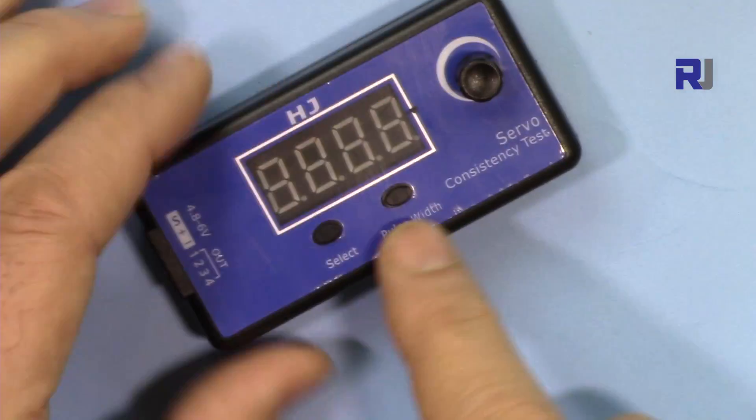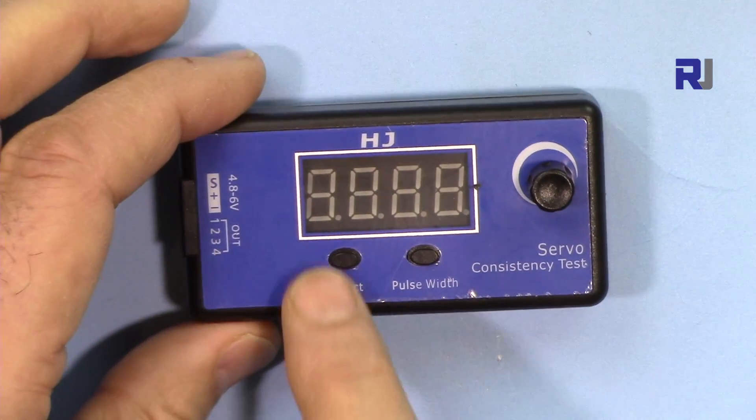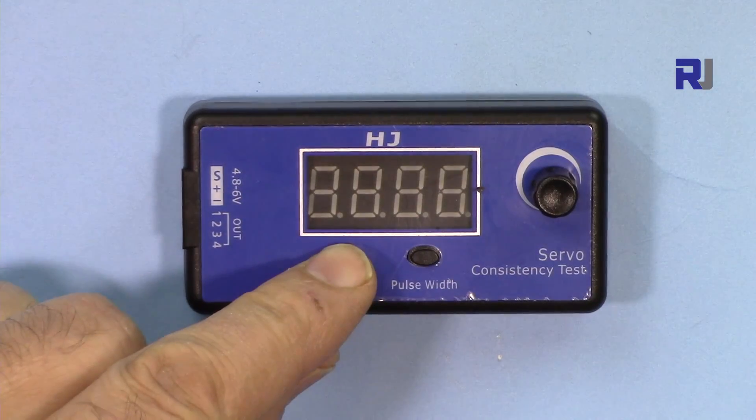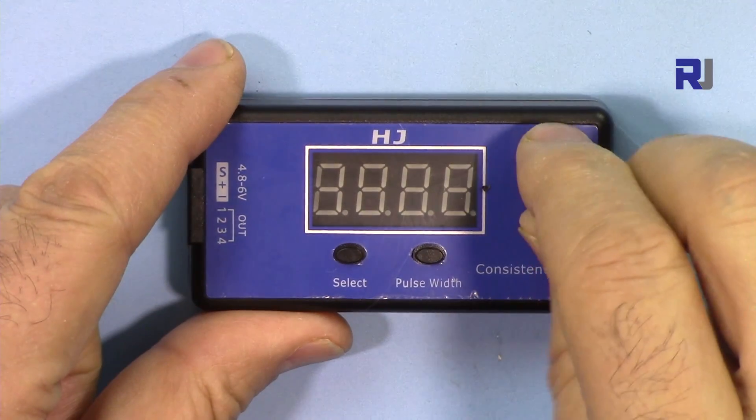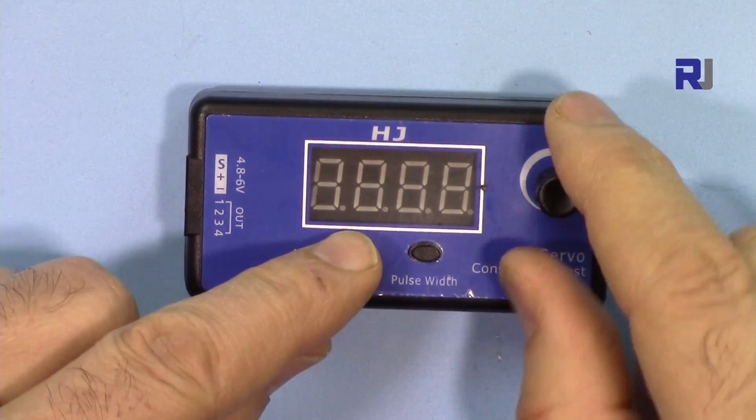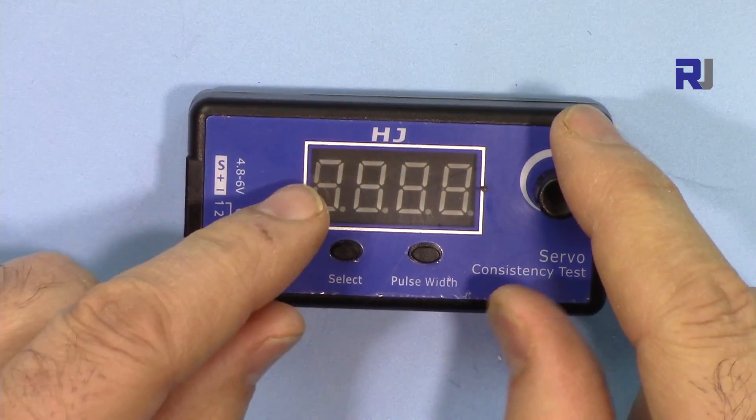By pressing this switch you can select three modes. Mode one is manual, so you just rotate and check at what level the servo responds.